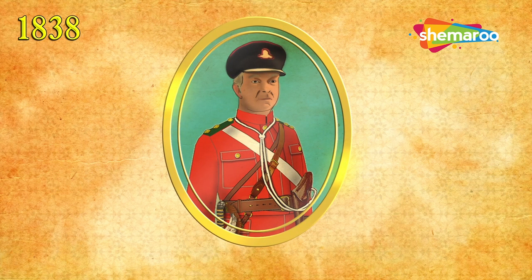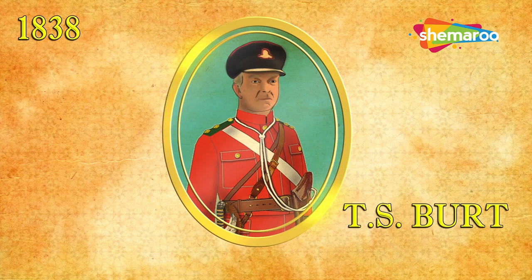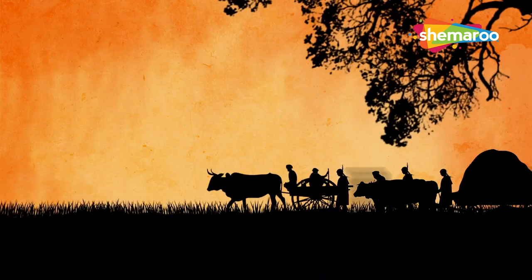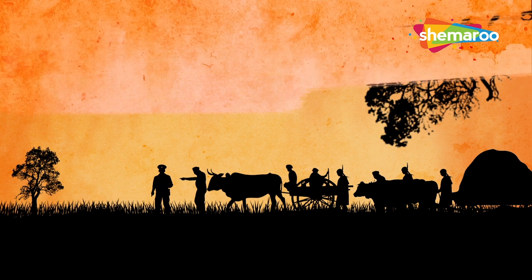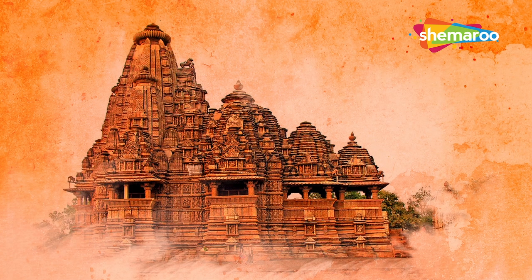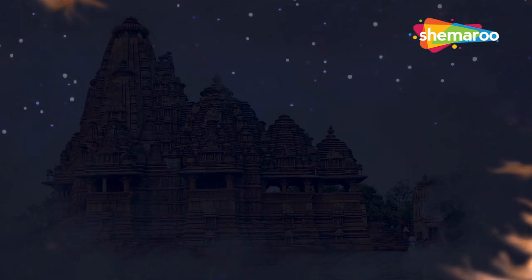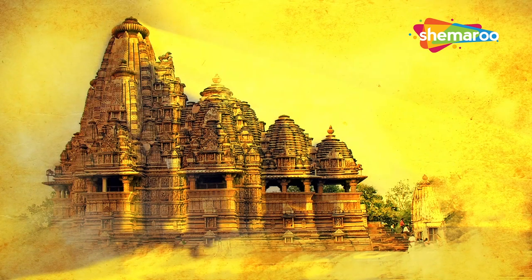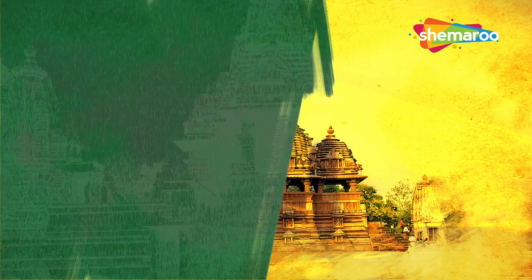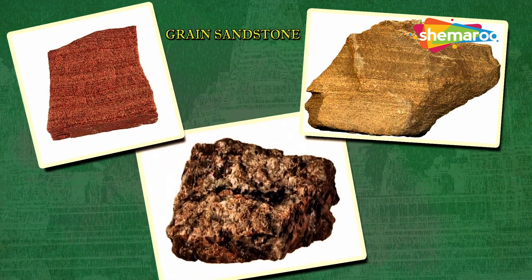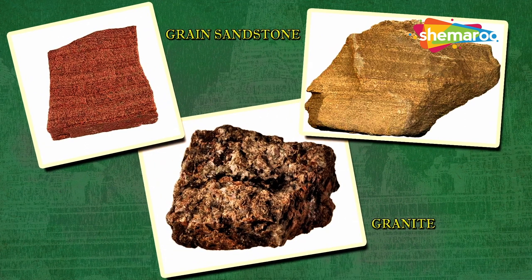In 1838, a British army captain, T.S. Burt, rediscovered the temples after being guided by some locals. The architecture was based on the North Indian Nagar style and reflects the cosmic mountain of Lord Shiva. All the temples were built facing east and are near water bodies. Most of the temples are built using fine-grain sandstone in different colours of yellow and pink, while a few are made of granite.